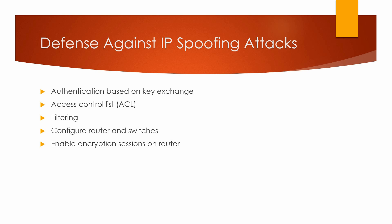You can use an access control list to deny private IP addresses on your downstream interface. You can implement filtering on both inbound and outbound traffic. You can also configure your routers and switches, if they support such configurations, to reject packets originating from outside your local network that claim to be originating from within.